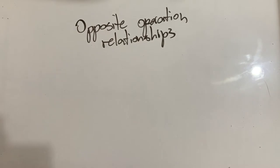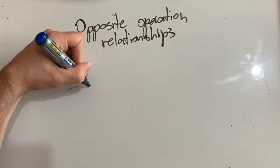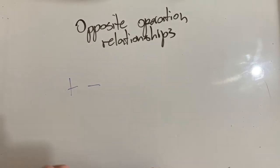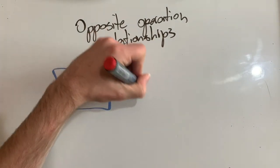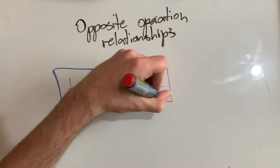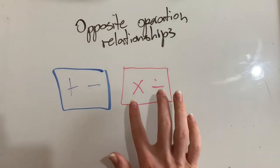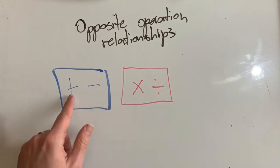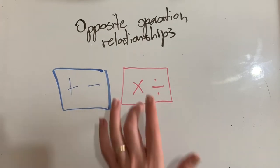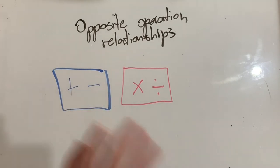So we've got two opposite operation relationships here. Plus and minus, or addition and subtraction, are related. So these two are opposite one another. And multiplication and division are also opposite operations, but they're not opposite to these ones. So times and plus are not opposite. Division and subtraction are not opposite. Multiplication and division are opposite each other. Likewise, addition and subtraction are opposite each other.